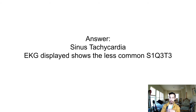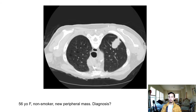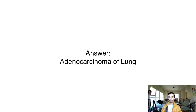56-year-old female non-smoker with a new peripheral mass — what's the diagnosis? This is a classic: when you have a non-smoker and a female, you always think about adenocarcinoma, especially if it's peripheral. So the answer is peripheral adenocarcinoma of the lung.